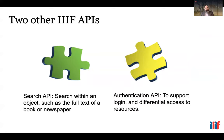There are two other APIs in the IIIF universe. The Search API allows you to search within texts associated with an image or newspaper. Then there is the Authentication API, which supports mechanisms for login or other authentication — for cases where only on-site or authorized users should see the full resolution of an image, where a smaller version is otherwise delivered, or where sensitive materials require a click-through agreement.